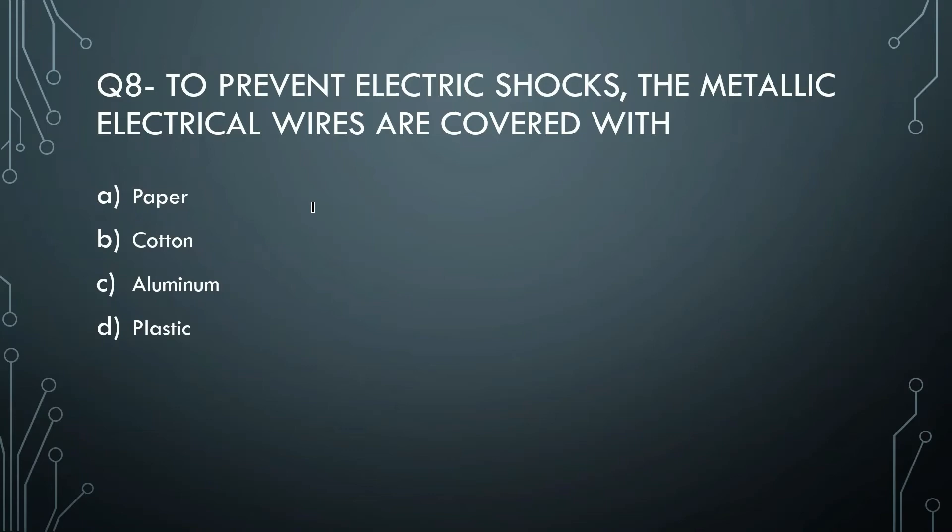The right answer is plastic. We know that switches are made of plastic. To protect our body from electric shock, we use plastic covers on wires. If we don't want electricity to pass, we use plastic as an insulating cover.